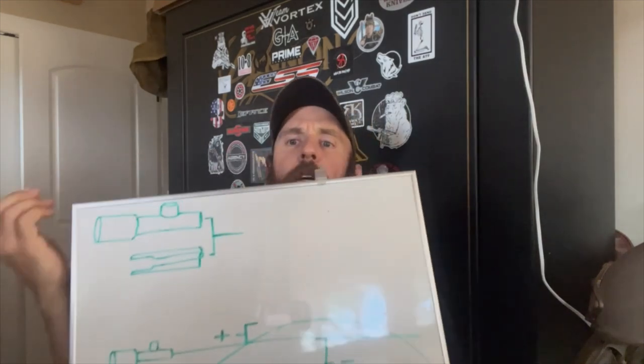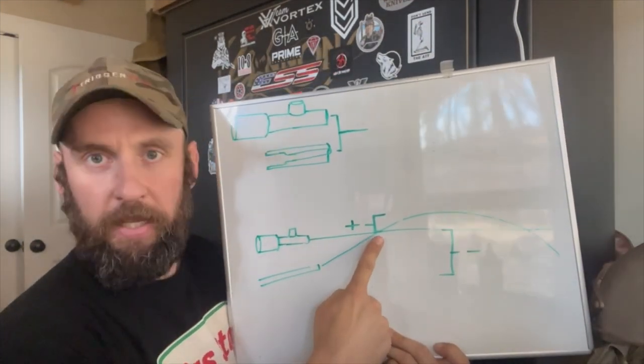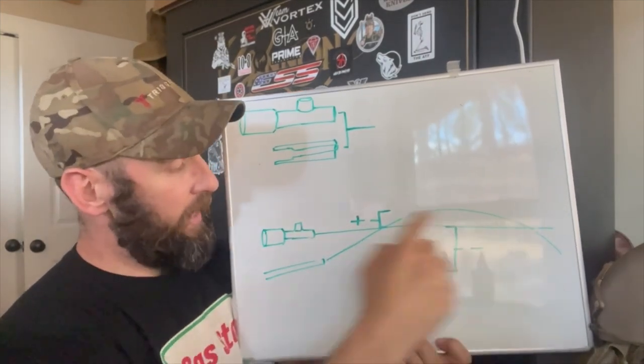Talking with Jimmy, he asked me to explain the interplay between riser height and zero distance. The main thing people have to understand is: what is a zero? A zero is an intersect between your line of sight — the dot in your red dot, the center of the crosshair in your reticle — and a trajectory. We mechanically set this by adjusting our optic, creating an intersect between a straight line and the arc of the bullet's trajectory. The zero distance is that intersect point.